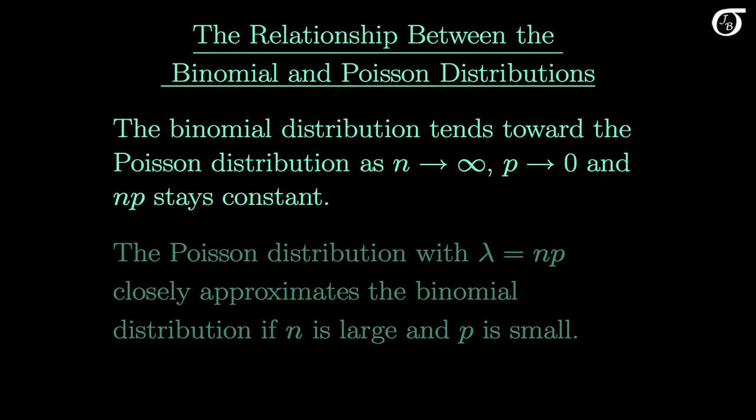There is an important relationship that sometimes helps us determine whether a random variable has a Poisson distribution. The binomial distribution tends toward the Poisson distribution as n tends to infinity, p tends to 0, and n times p stays constant. The important practical point is that the Poisson distribution, with lambda equal to n times p from the binomial, closely approximates the binomial distribution when n is large and p is small. This is why the radioactive decays of plutonium follow a Poisson distribution: even for a tiny bit of plutonium there are a very large number of atoms, each with a tiny probability of decay in a 2-second period — a binomial problem with very large n and very small p.